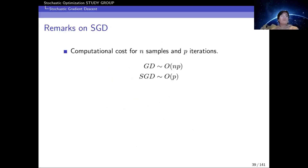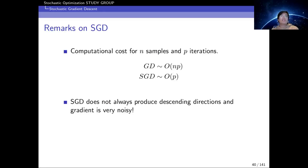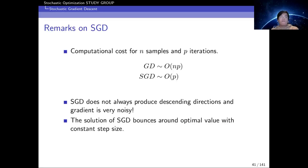Some remarks on SGD. For n data samples and p iterations, if the computational cost of a single gradient is 1, the total cost of gradient descent is np and the cost of SGD is p — n times less than gradient descent. However, SGD does not always produce descending directions as the gradient is noisy. If we choose a constant step size, the SGD solution will not converge to the optimal value; it will bounce around the optimal value.